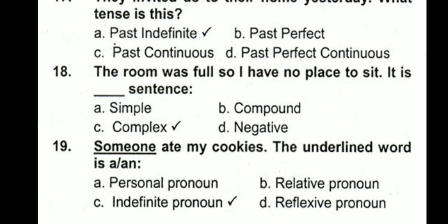'The room was full, so I have no place to sit.' 'So I have no place to sit' is the subordinate or dependent clause. 'The room was full' is the main clause or independent clause. Independent clauses are also called main clauses; dependent clauses are also called subordinate clauses. When a sentence is a combination of an independent clause and a dependent clause, it is a complex sentence. Independent clauses give full meaning — 'the room was full' is a complete message, while 'so I have no place to sit' is not complete on its own.